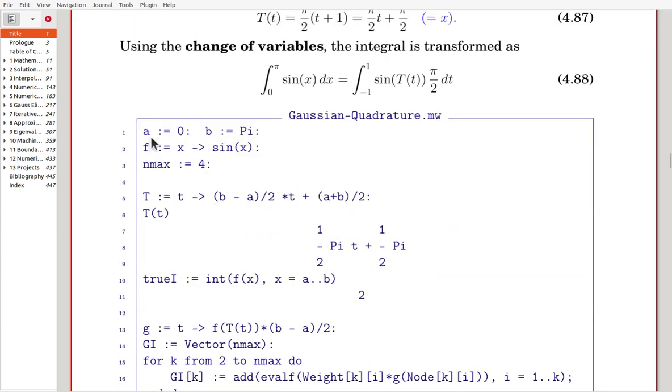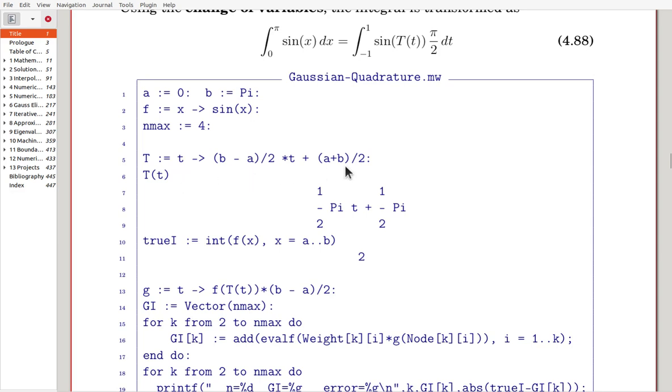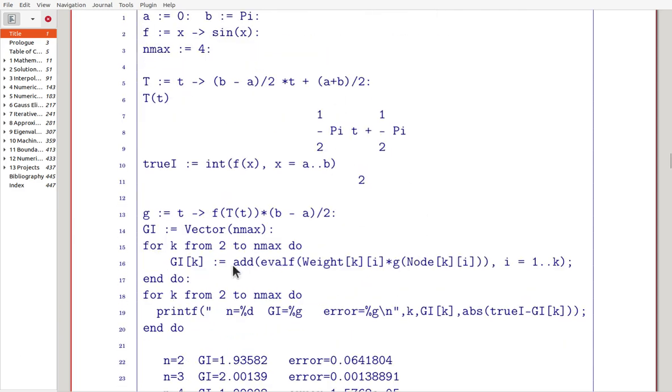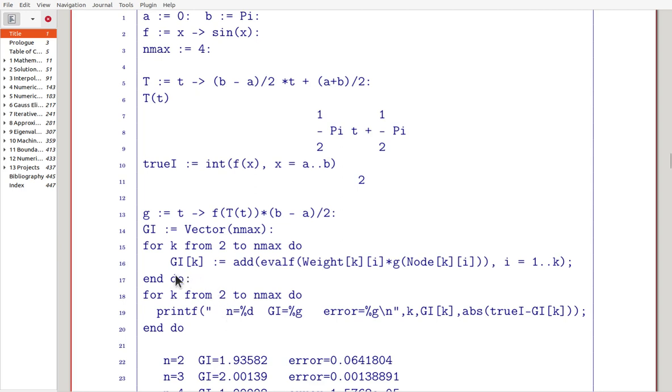Here now implementation, a and b, and f is sine x, n max here, n is moving two to four, so maximum value is four. And now that's the transformation, and here we, for the purpose of analysis, we try to get the true value, which is two. That value is two. Now we define that g of t in this way. That is exactly that one. And here we try to get a Gauss integration. Gauss quadrature by summing. Now the weight and nodal points evaluated from function g, and add them to get the Gauss quadrature.